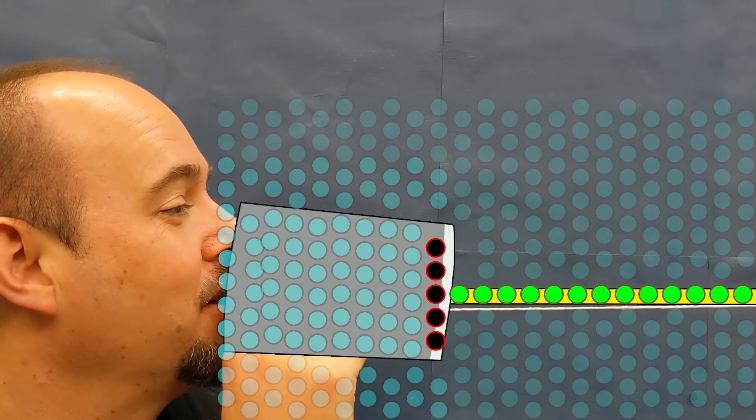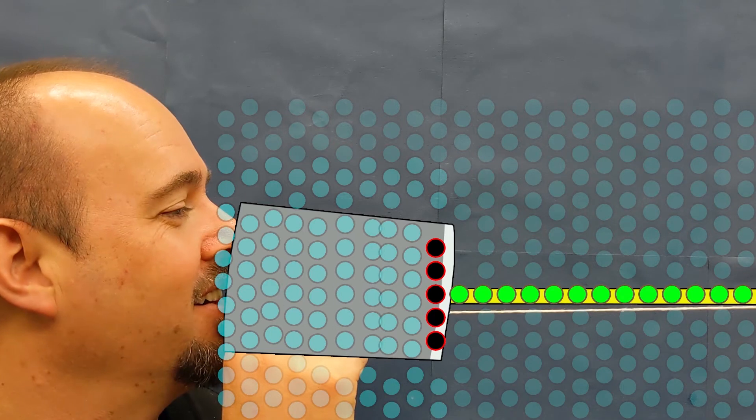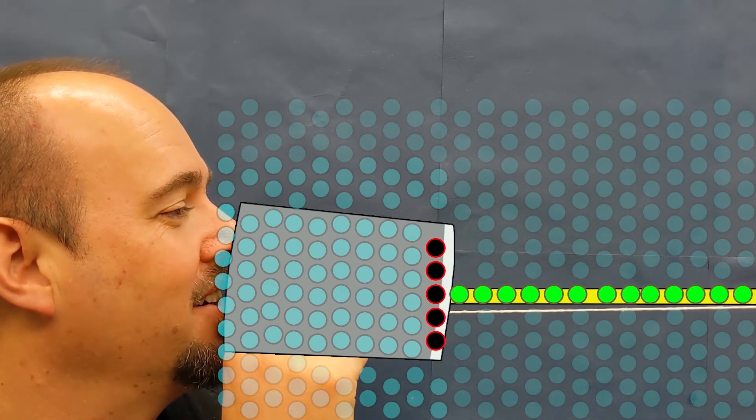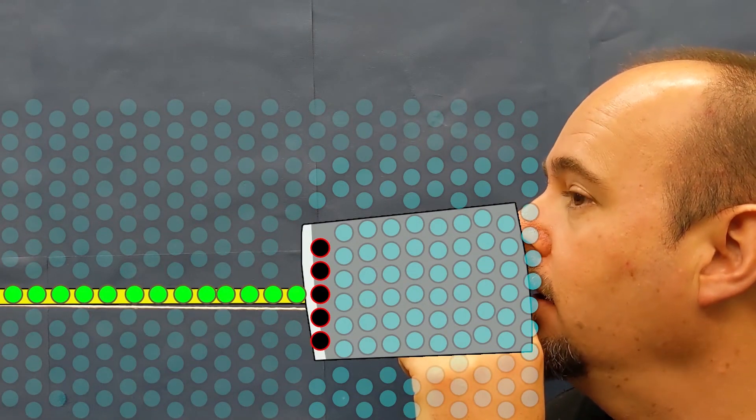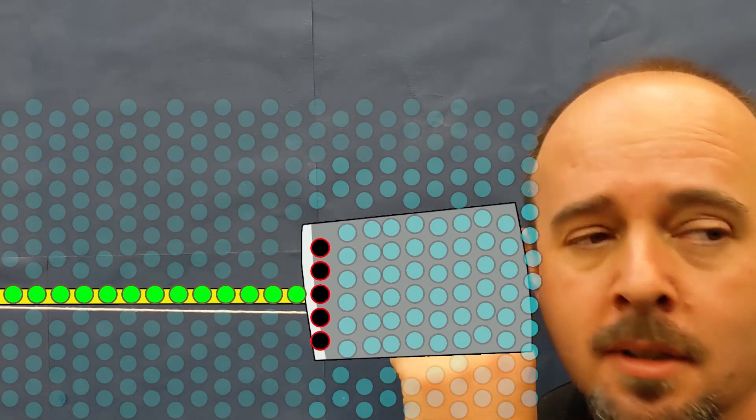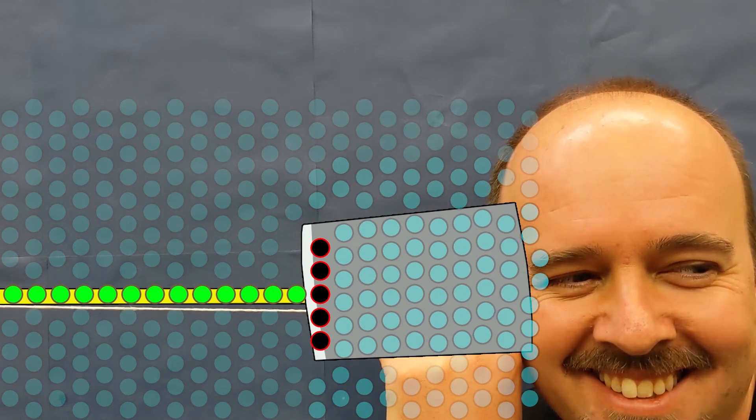Once the air molecules hit the base of the can, the metal molecules vibrate too. This vibrates along the molecules of the string to the other can, vibrating its metal base, which in turn vibrates the air molecules inside the can and into the ear of whoever is listening. If the string is loose, the vibrations are quickly absorbed by the dangling string as the loose part is free to bounce around in the air until all the vibrational energy is lost.